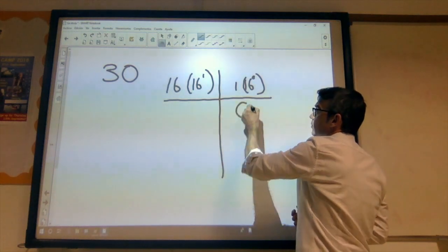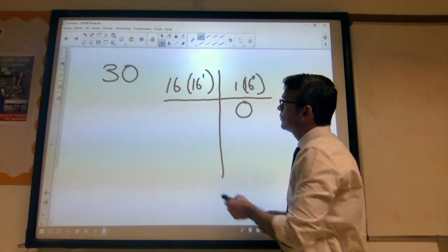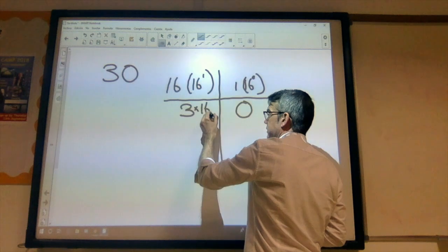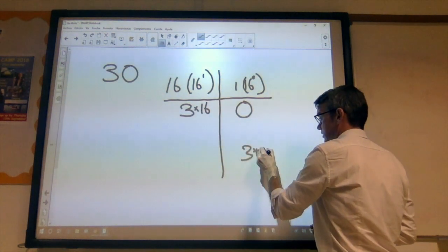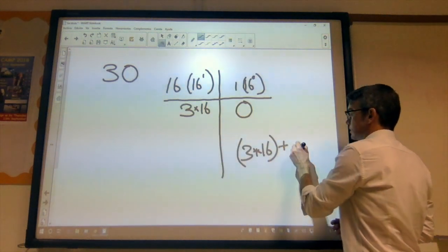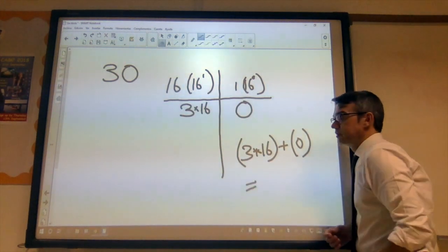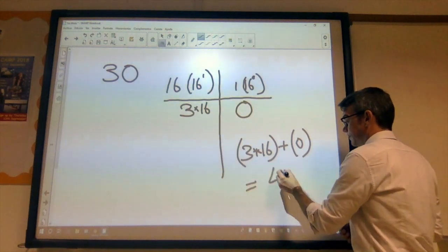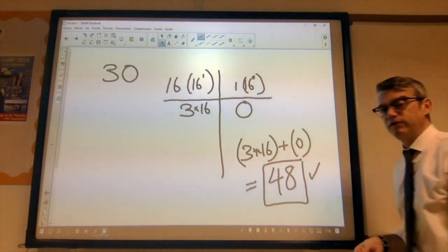So, we've got zero ones. We've got three sixteens. And we add those together. So, three times 16 plus zero ones gives us 48. So, let's see here. It's correct.